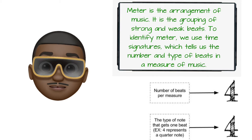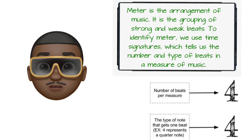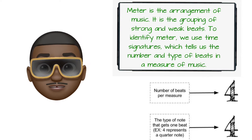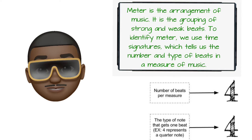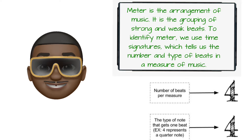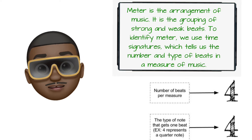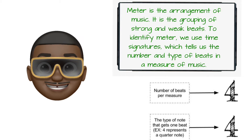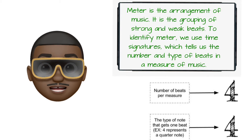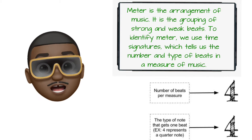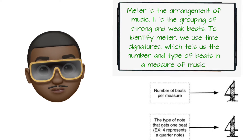The top number always says the number of beats per measure. The bottom number tells us the type of note that gets one beat. You find the time signature at the beginning of pieces of music.